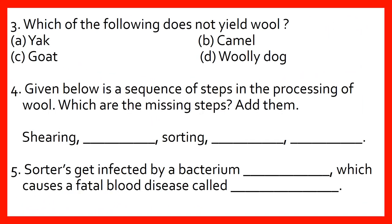Question No. 3: Which of the following does not yield wool? (Yield means produce.) Option A: Yak. Option B: Camel. Option C: Goat. Option D: Woolly dog.